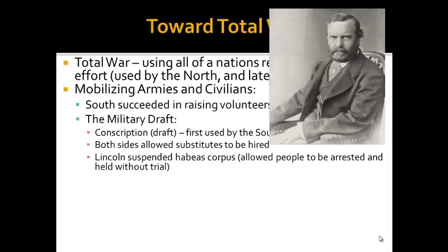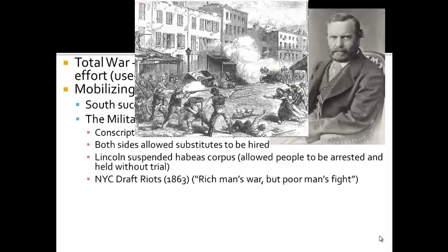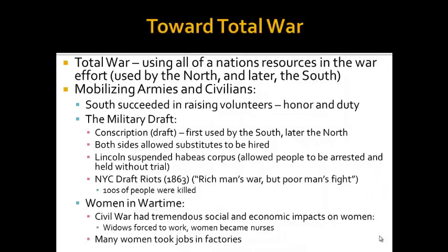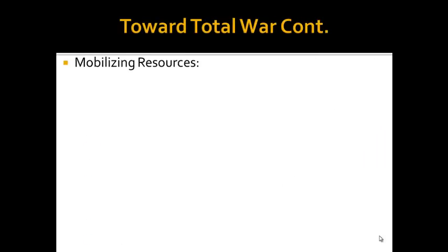During the war, Lincoln suspended habeas corpus, which means that people who are arrested must have a trial. So people were now being arrested and could be held without trial. In 1863, we have the New York City Draft Riots, named a rich man's war but a poor man's fight, because we see lots of Irish immigrants and African Americans rioting in New York City, and hundreds of people were killed. The Civil War had a tremendous social and economic impact on women — widows were forced to work, women became nurses, and many took jobs in factories as well.